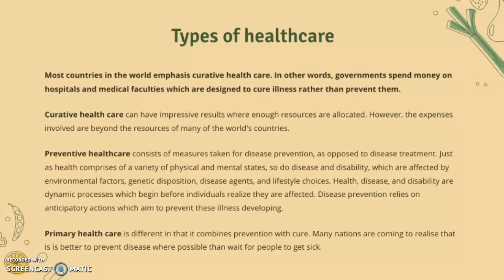Preventative healthcare, on the other hand, consists of measures taken for disease prevention as opposed to disease treatment. Health comprises a variety of physical and mental states, and disease and disability are affected by environmental factors, genetic disposition, disease agents, and lifestyle choices. Disease prevention relies on anticipatory actions which aim to prevent illnesses from developing before they actually occur.